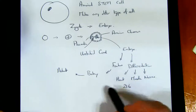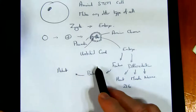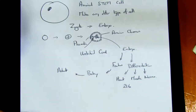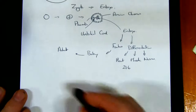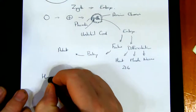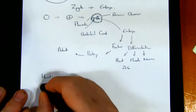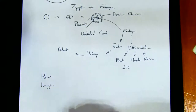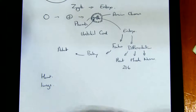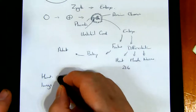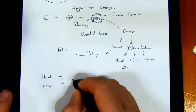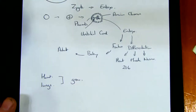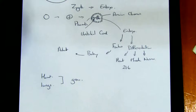Many people suffer and die because parts of their body don't work properly — problems with the heart, problems with the lungs. Wouldn't it be nice if we could perhaps grow a new one? Well, there are a few problems with trying to do this.